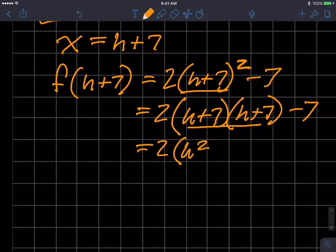So I get h squared plus 14h plus 49. Hit pause if you need to to make sure you get where all those numbers come from. I'm going to distribute the 2 now.